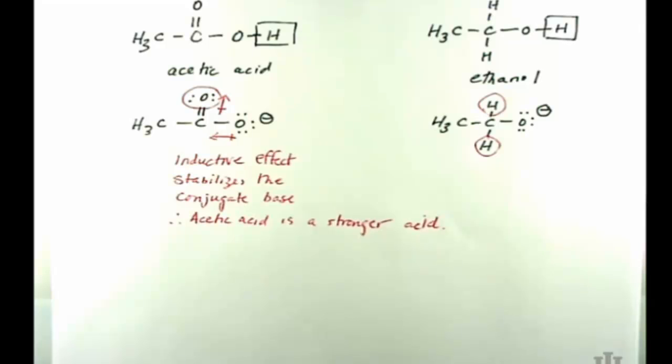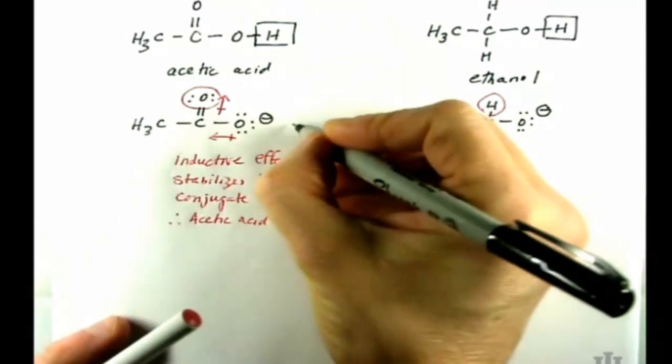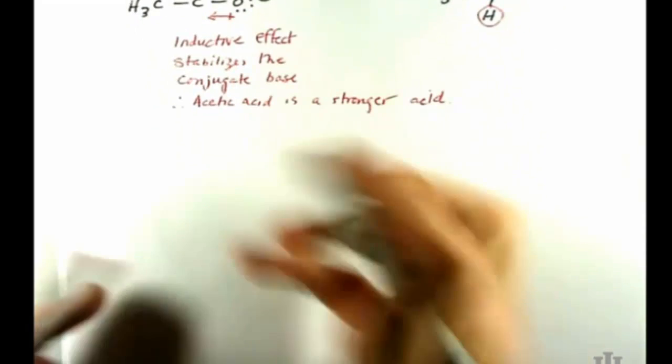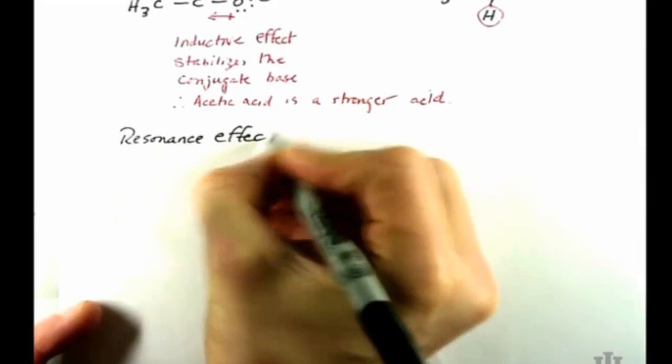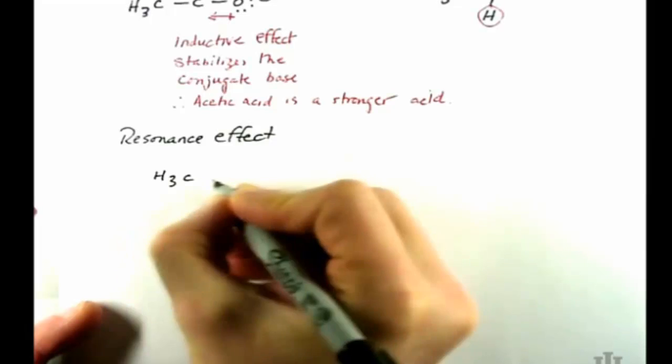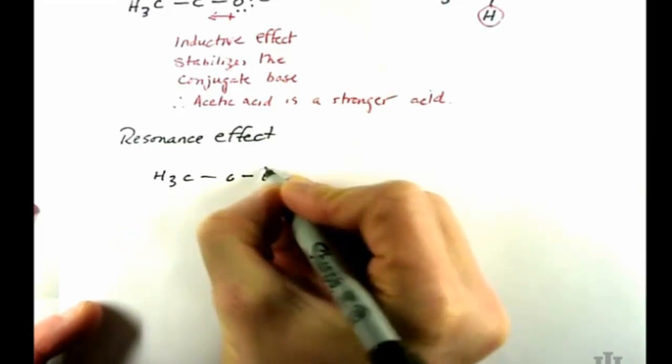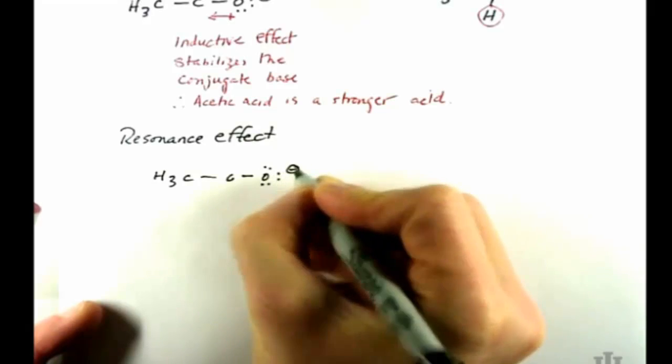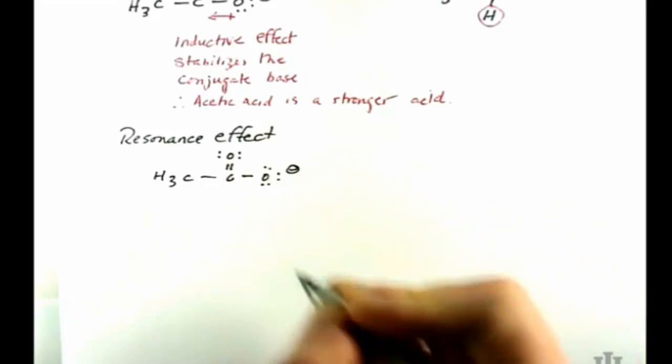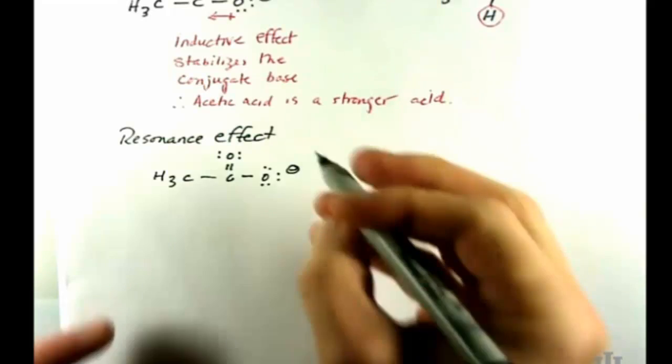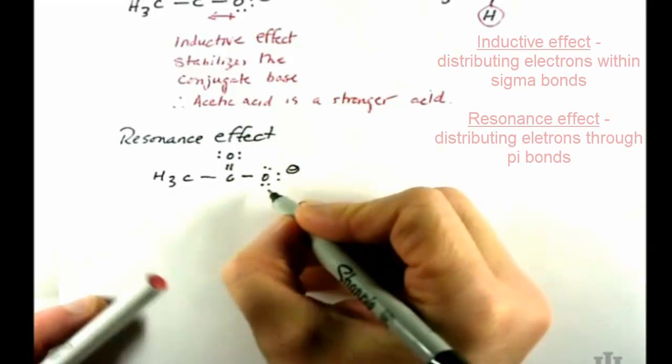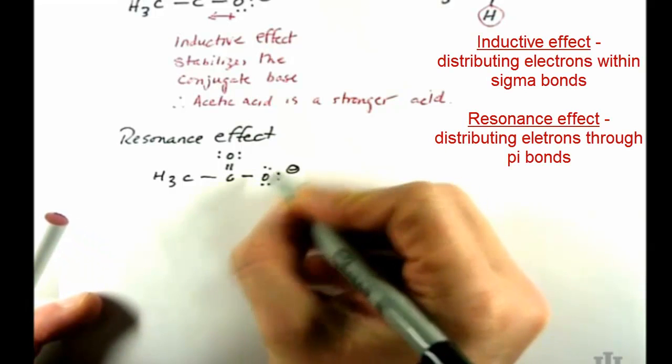The other effect that plays a role here is the effect that's called resonance effect. And in resonance effect we're going to use the pi bonds in the molecule to think about delocalization of charge. So here we have a negative charge on this one oxygen.